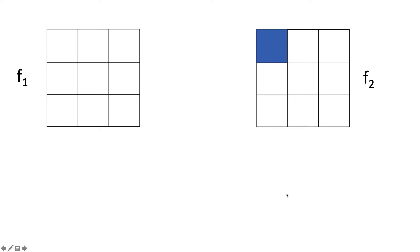One pixel from f2 performs convolution operation with each of the pixels from f1 and produces a single channel 3x3 feature map.